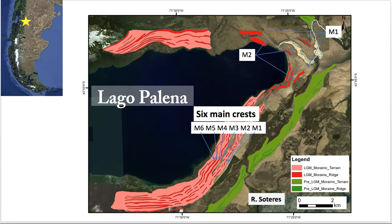This is a preliminary geomorphic map which Rodrigo Saterrez constructed. We've collected a bunch of samples from here, and processing those samples is one thing I hope to do so we can get dates for these moraines. For a long time, geologists have been able to identify these sequences of moraines like these red ones here, but haven't been able to say when they formed.